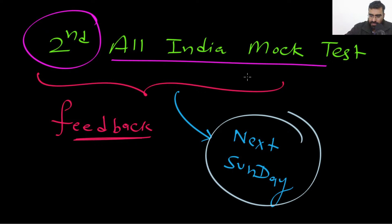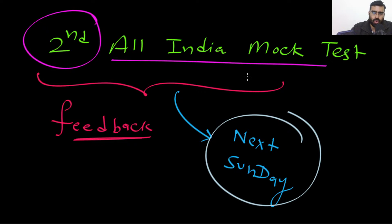You can check and compare your marks with the toppers' marks. For example, Khushith has scored very good marks. Don't compare from 100 — compare relative to the topper. For instance, if the topper is getting 75 or 80 marks, you can compare your marks accordingly.